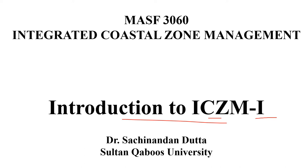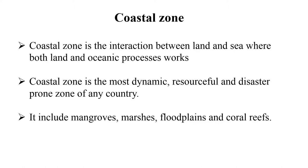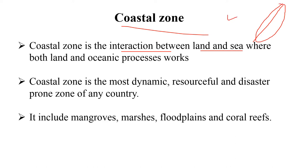In the first lecture we'll talk basically about the coastal zone. The coastal zone is the interaction between the land and sea — here is your land side and here is your seaside. This is the coastal zone, where both oceanic and land processes are at work.